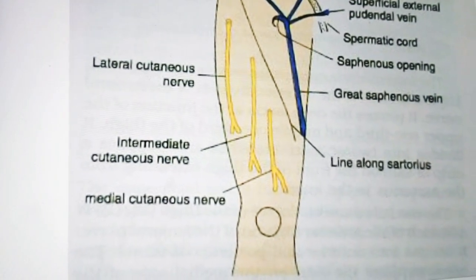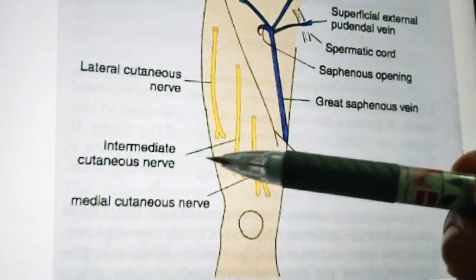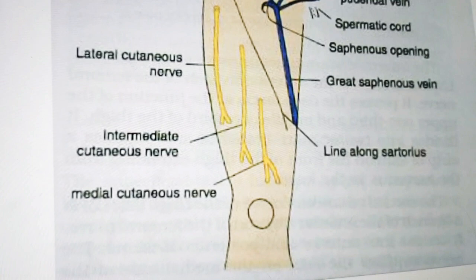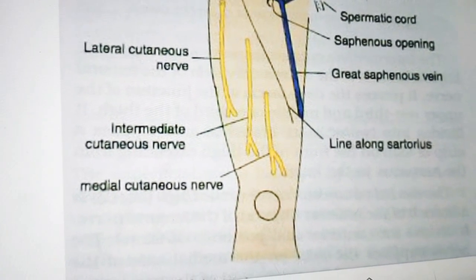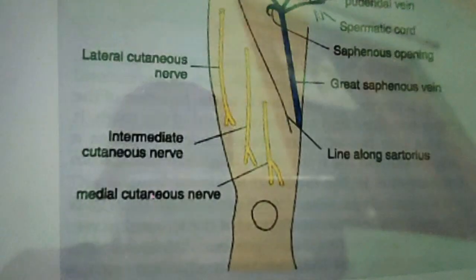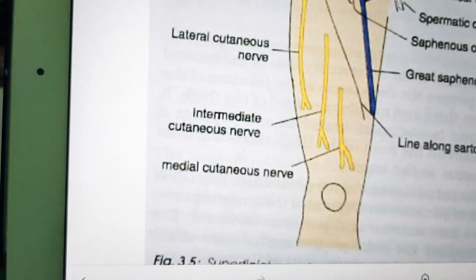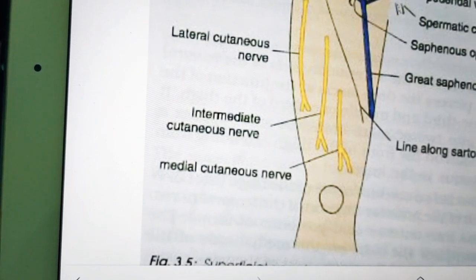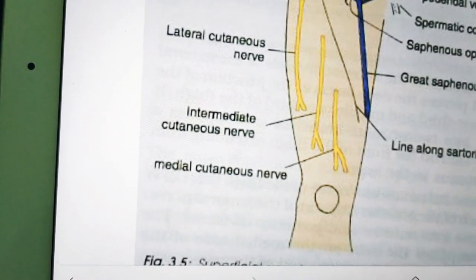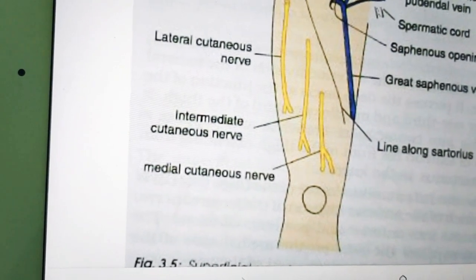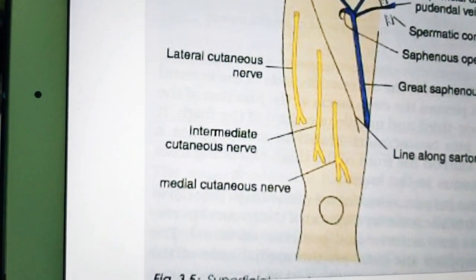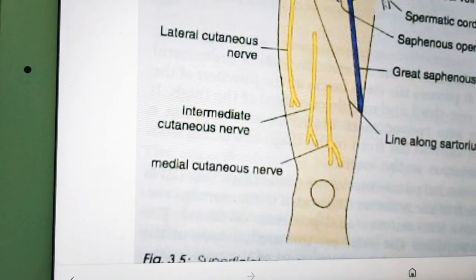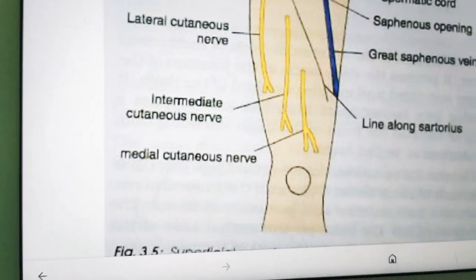The adductor tubercle is a bony projection at the uppermost part of the medial condyle of the femur, where the tendon of adductor magnus is attached. To palpate the tubercle, flex the knee partly and note the wide shallow groove that appears posterior to the mass of vastus medialis. Just posterior to vastus medialis you can feel the adductor magnus, and the tendon can be traced down to the adductor tubercle.